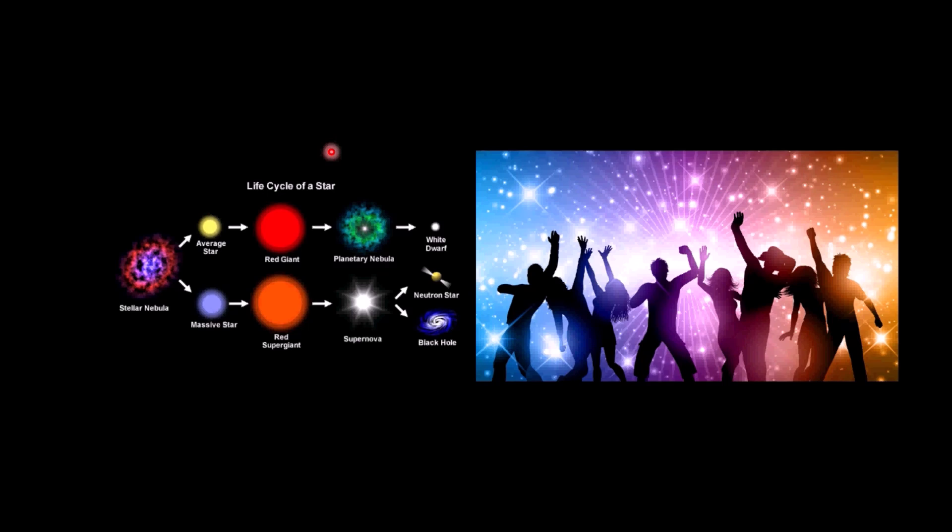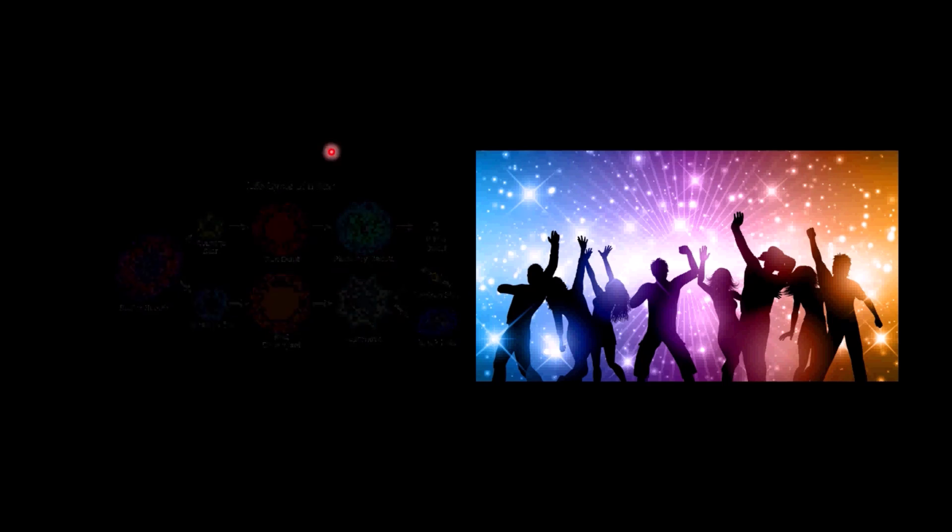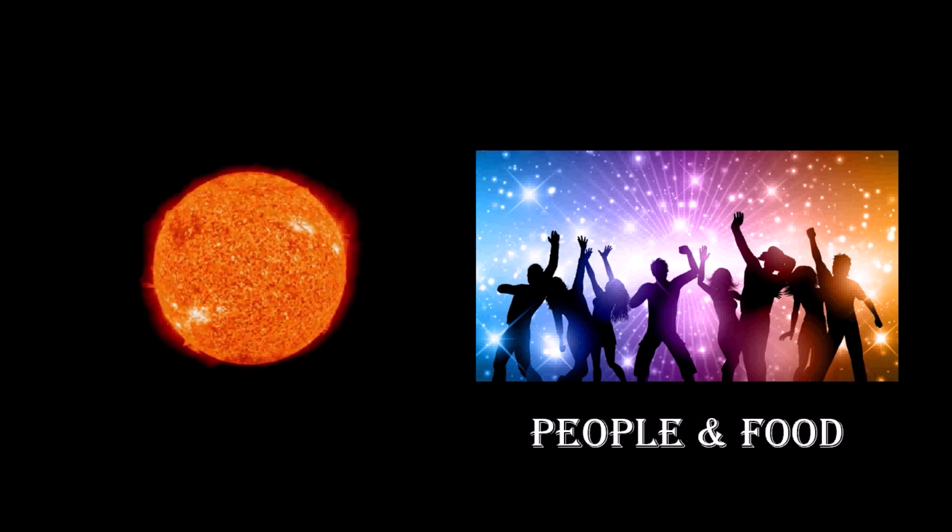We're going to compare a party with throwing a party with making a star. Now, for a party, I can think of two things you absolutely need to have in order to have a party. And that is people and food. If you don't have people, you don't have a party. And if you don't have food, they're not going to stay. So, if you think of those two things for a party, relate it now to the star. The star needs mass and it needs fuel. It needs mass and fuel, people, and food. That's the two relationships we're going to make here with this analogy.